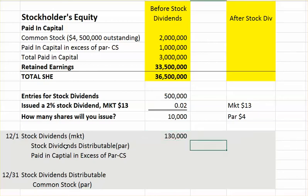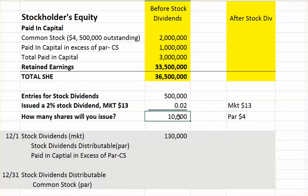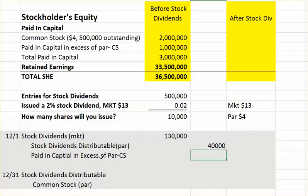I'm going to credit a liability account called stock dividends distributable, because on the date of distribution I have to give away that stock. The par value is $4 and I'm giving away 10,000 shares, so my liability is $40,000. Paid-in capital in excess of par is the difference between these two, which is $90,000.